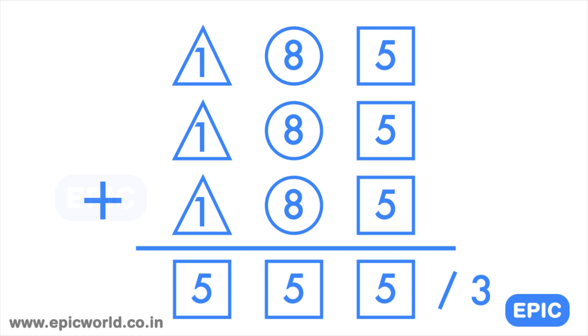This looks like a perfect solution as each of them has a different value so the triangle will be one, circle will be eight and the square will be five.